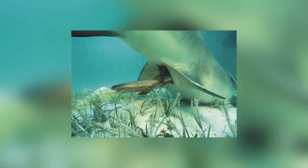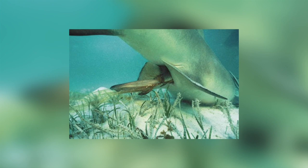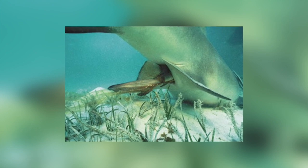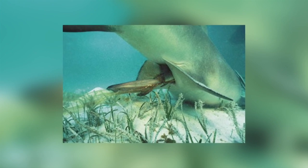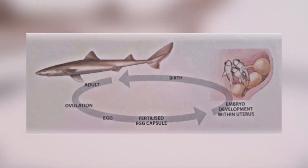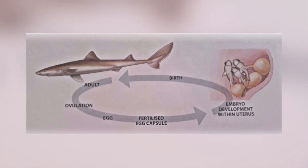Sharks also give birth to live young, and there are two ways in which this can happen. One is by ovoviviparous embryonic development, where the developing embryo feeds on the egg yolk of the yolk sac and the fluids that the walls of the oviduct secrete.